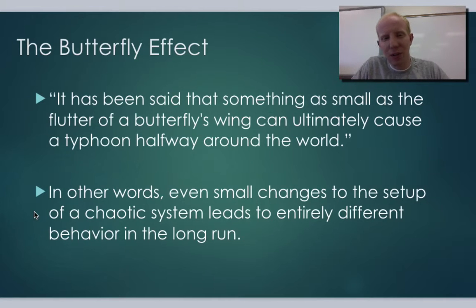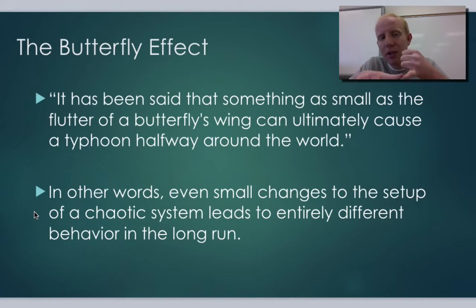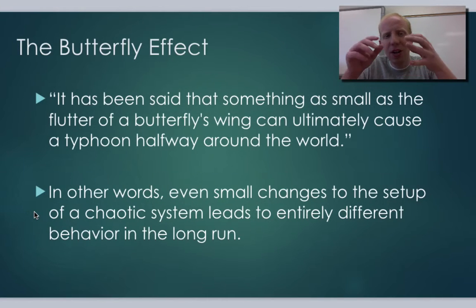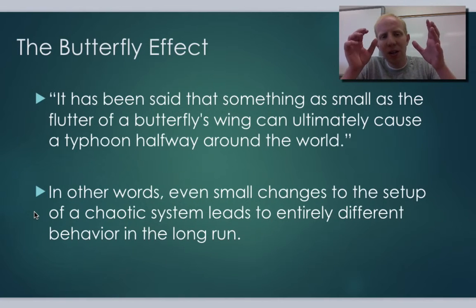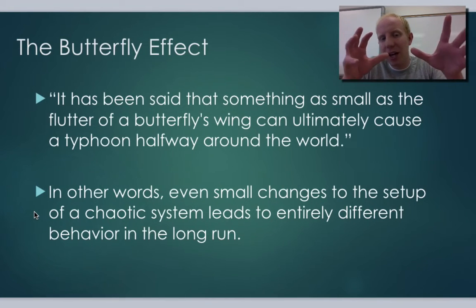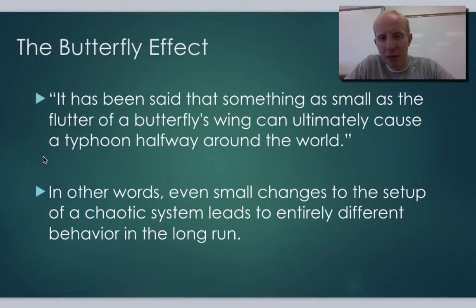Think about the weather and all the different things you'd have to measure to predict it on any given day. You'd have to know exactly what the air pressure was in every single location on Earth, what the temperature was going to be based on that. There are so many places you would have to measure to get it perfectly. Even these small things you're not accounting for — butterfly wings and other things like that — can change what the forecast looks like 10 days down the road.